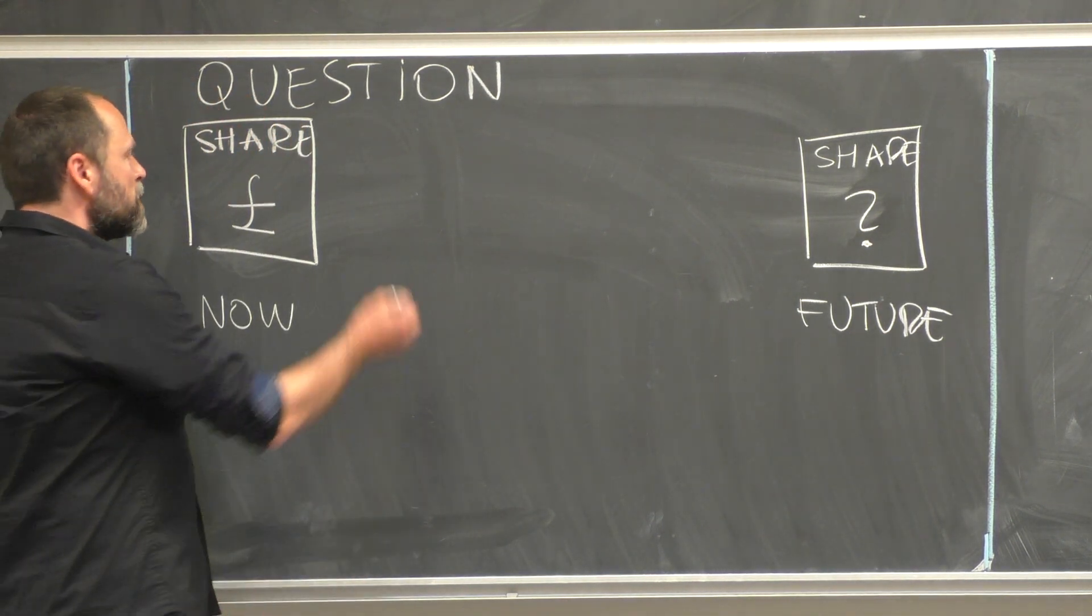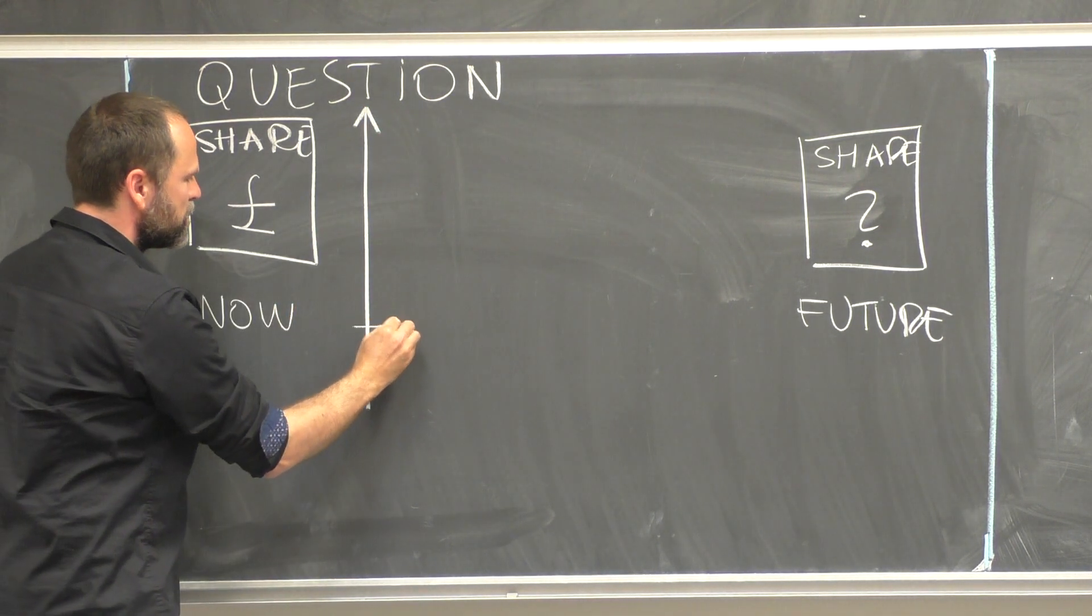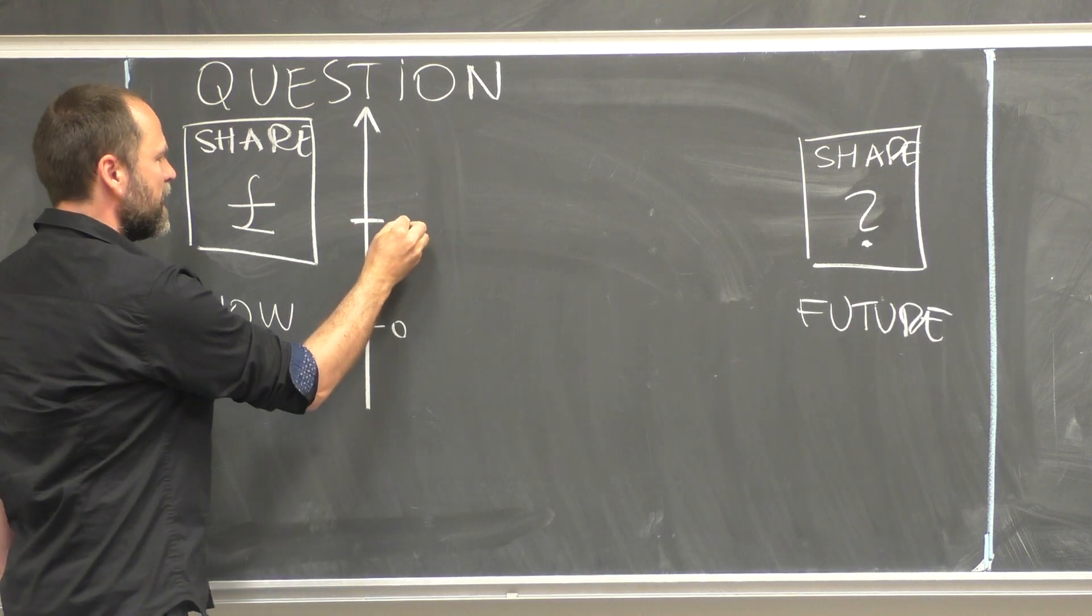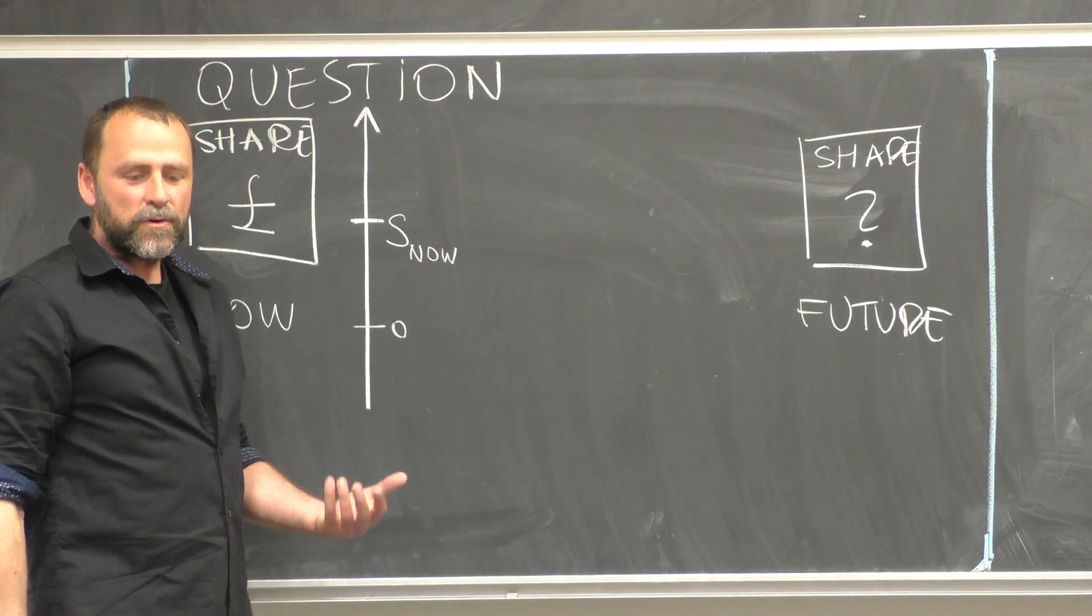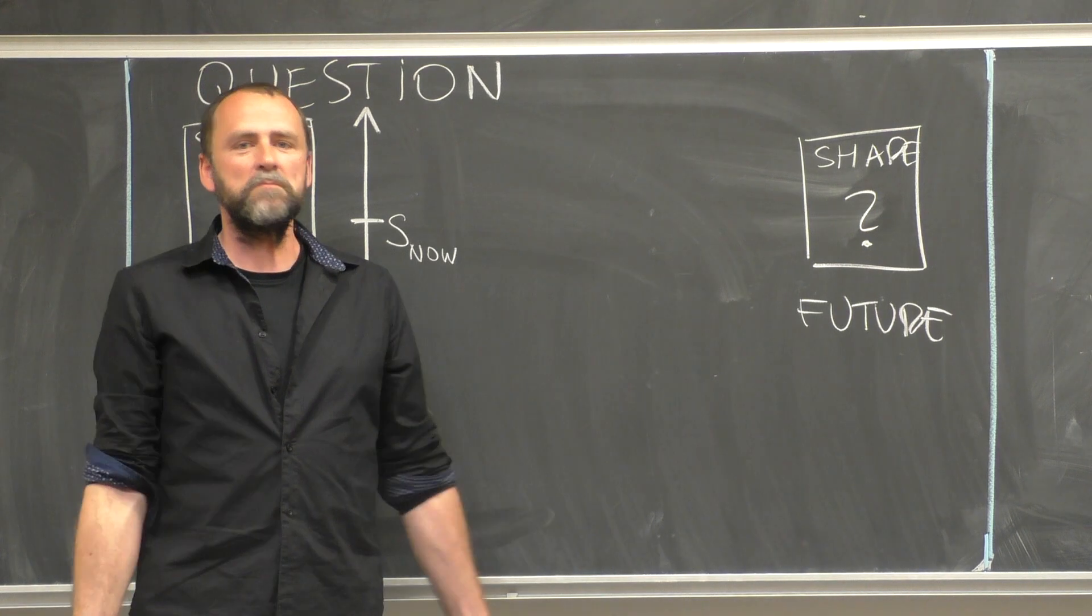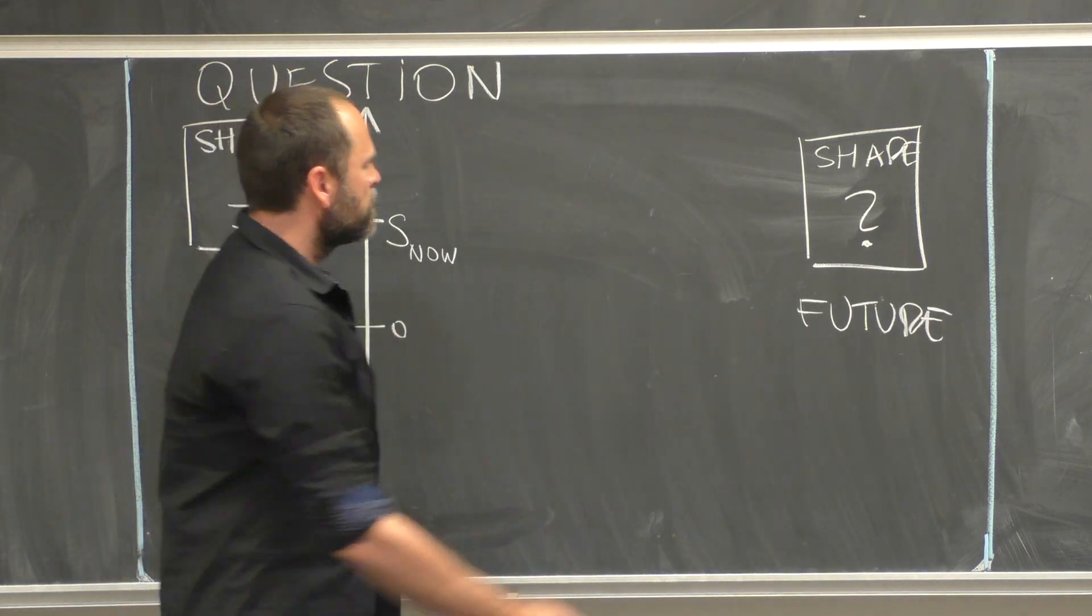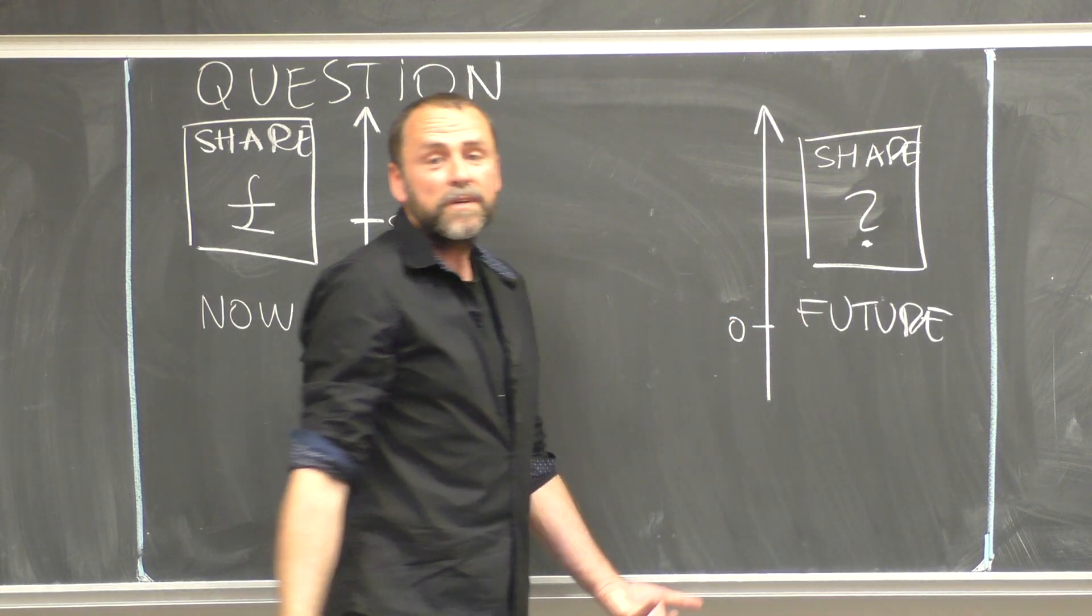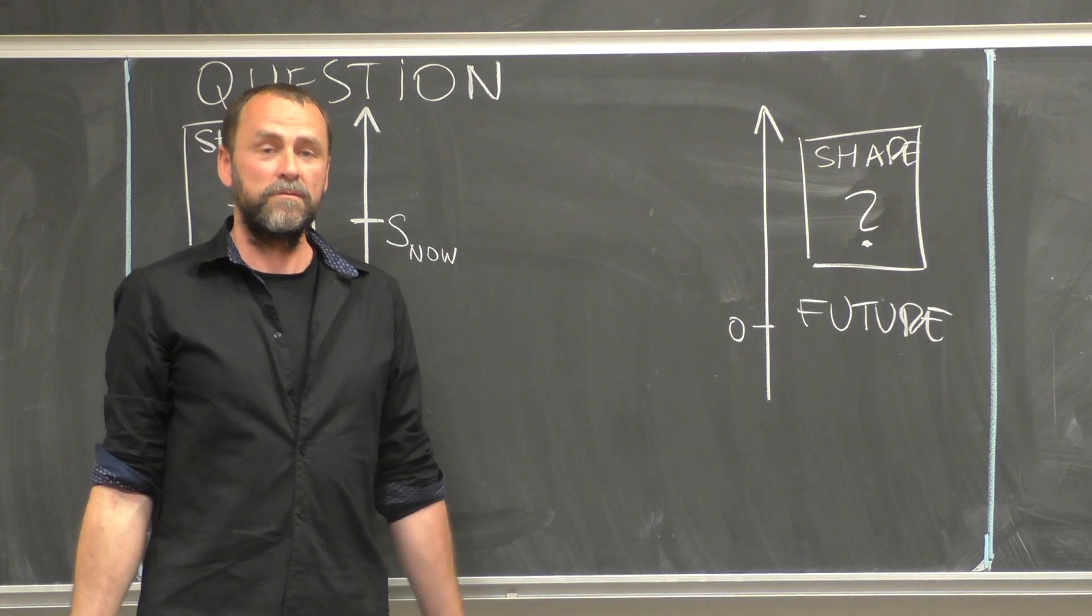Imagine that this is an axis of numbers. There is zero and what I denote by S now is the price of our share. And then in the future, the future might be in one week, in one month, in one year. We have a similar situation, but we don't really know the price.